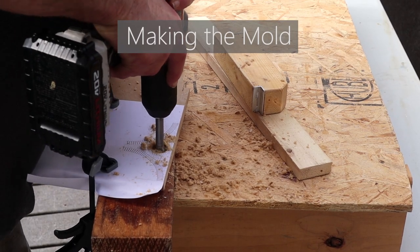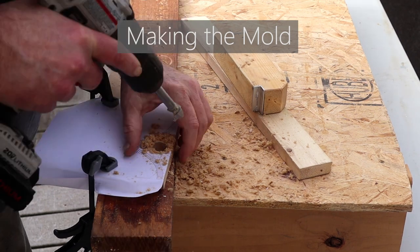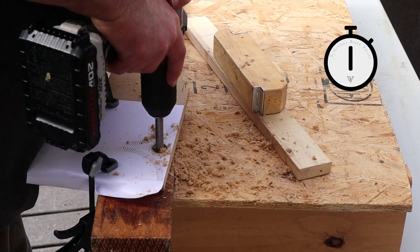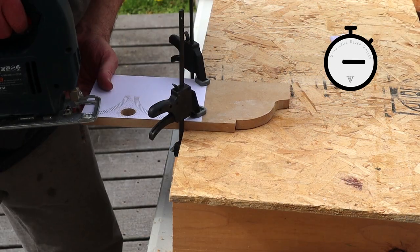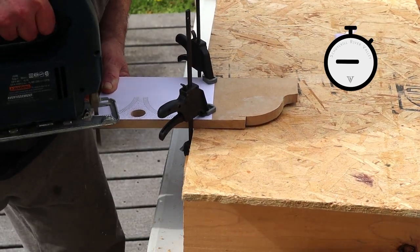I attached the paper template to a piece of half-inch MDF and drilled out the piercing. My saber saw made short work of cutting the spandrel to shape.